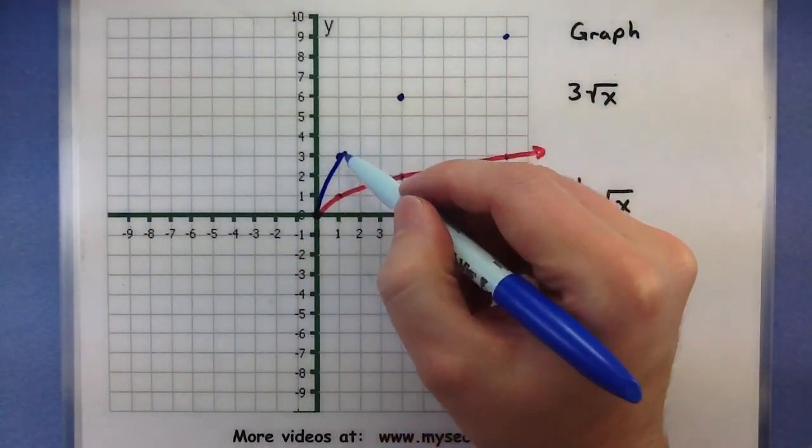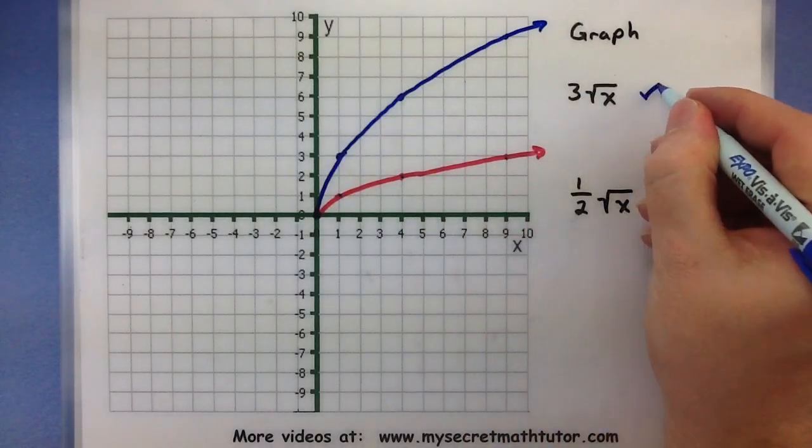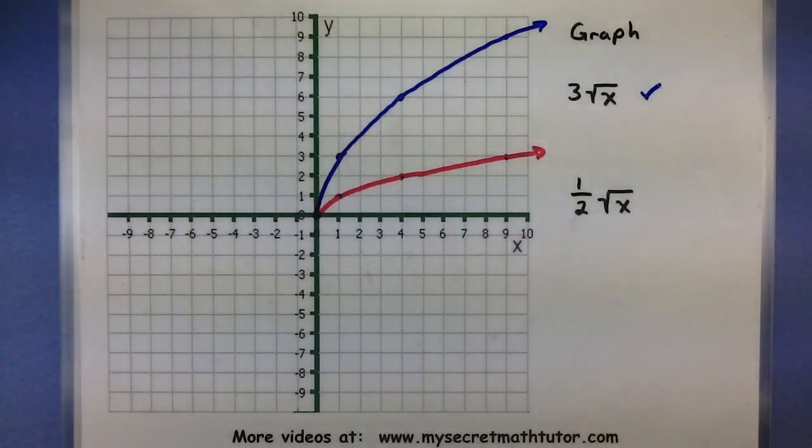Well you want to see that each point is now 3 times farther away than what it used to be. Let's draw this guy in here. So you can definitely see that this graph has been stretched out vertically and it looks definitely taller than what it used to.